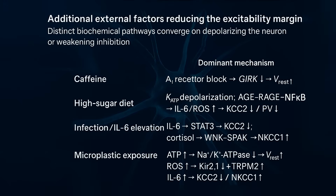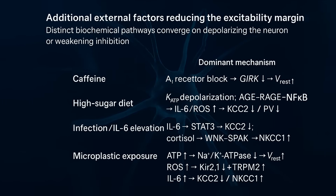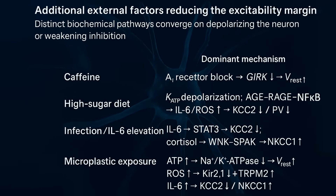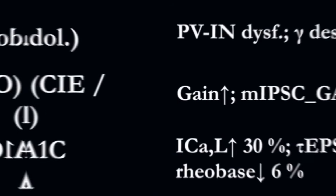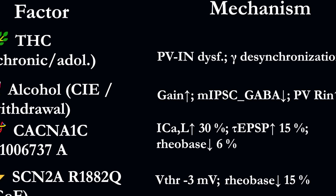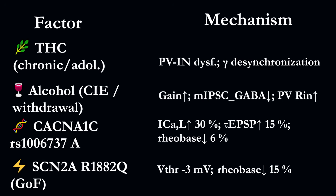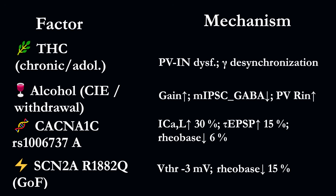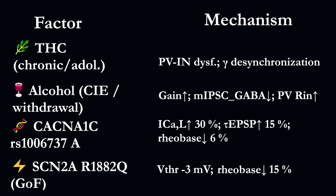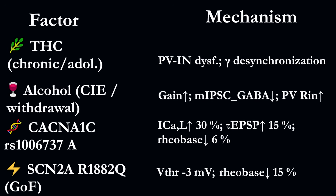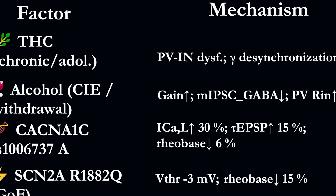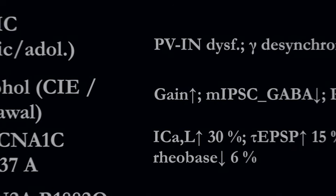In addition to all this, everyday risk factors come into play: caffeine, high sugar intake, infections, microplastic exposure, THC, alcohol and specific genetic variants. Each acts through a different pathway — metabolic, cytokine-related, oxidative or ionic — yet they all converge on the same outcome: a further narrowing of the neuronal excitability margin.